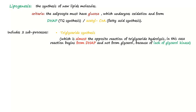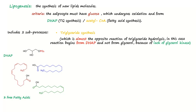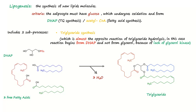Notice the reactions: dihydroxyacetone-phosphate and three fatty acids react together, removing three water molecules to form a triglyceride. The other process of lipogenesis is fatty acid synthesis, which will be discussed in the next video of MedIn5Team.